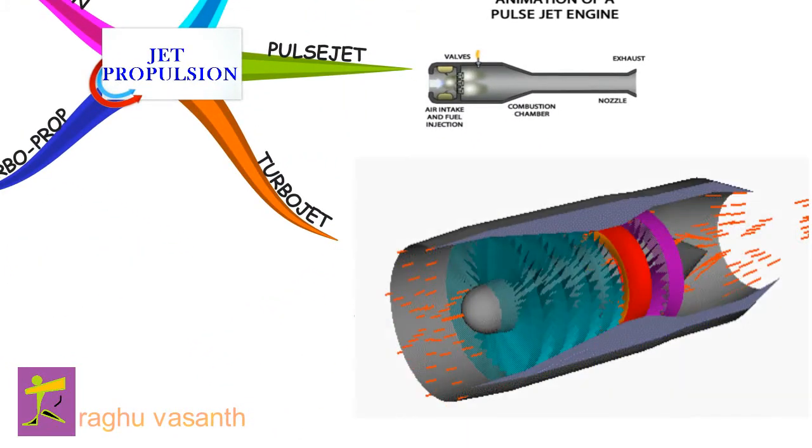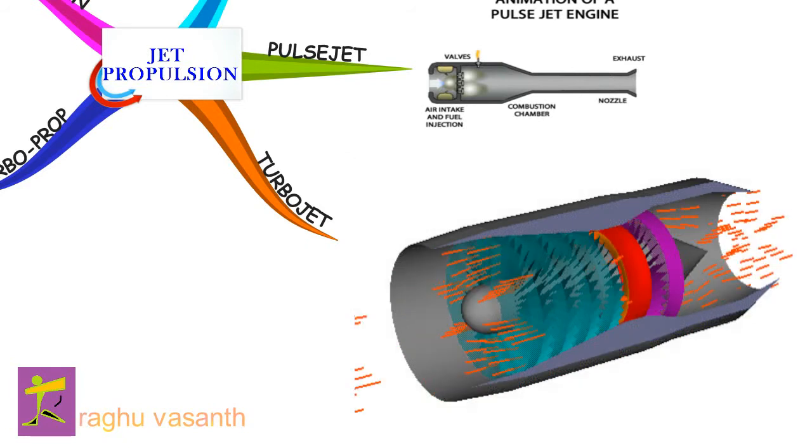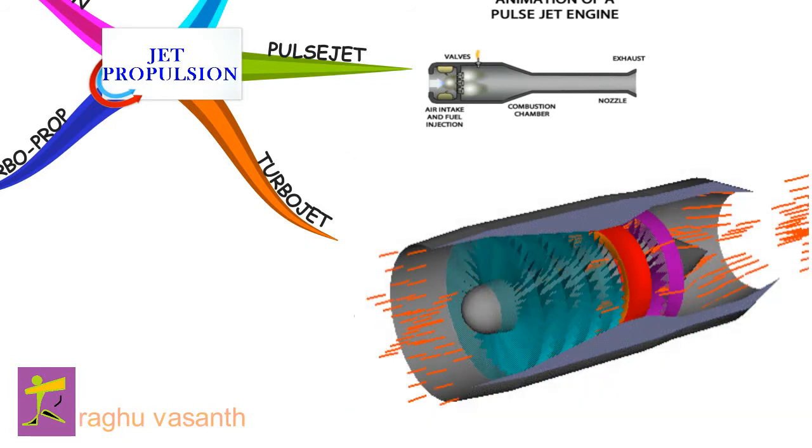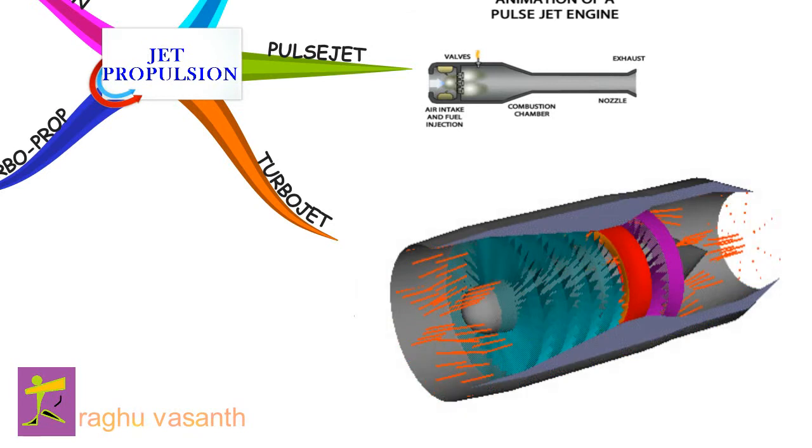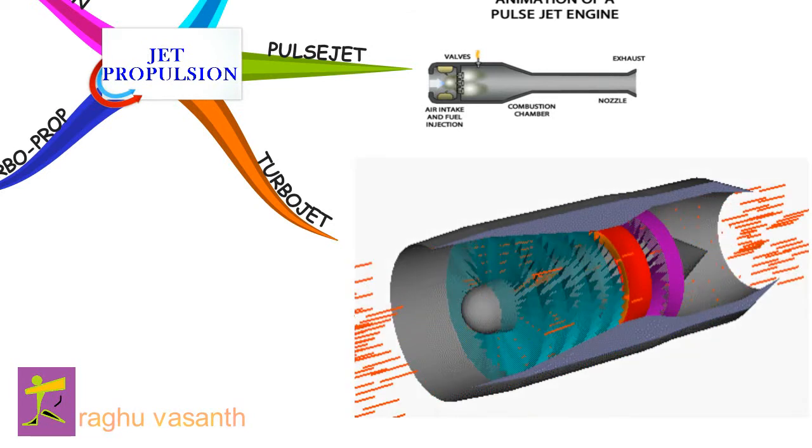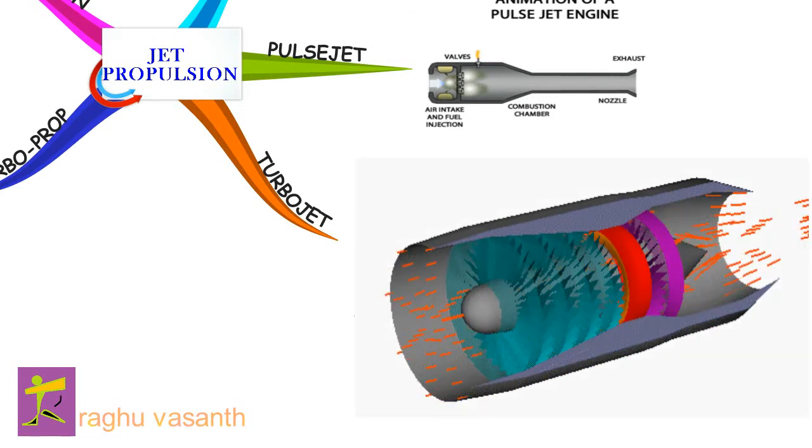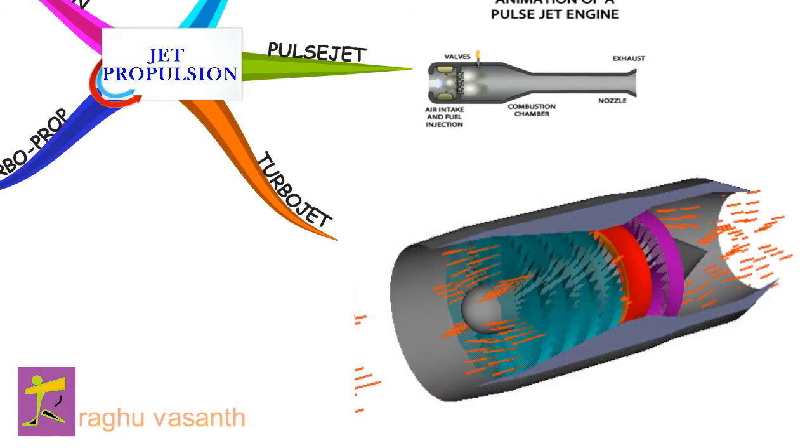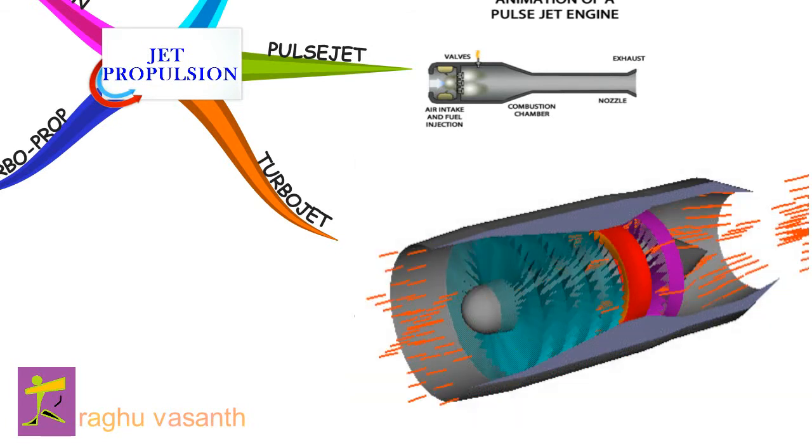The turbojet is an air breathing jet engine, usually used in aircraft. It consists of a gas turbine with a propelling nozzle. The gas turbine has an air inlet, a compressor, a combustion chamber, and a turbine that drives the compressor.